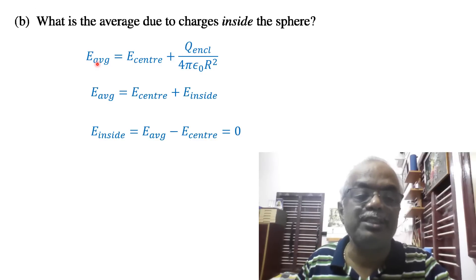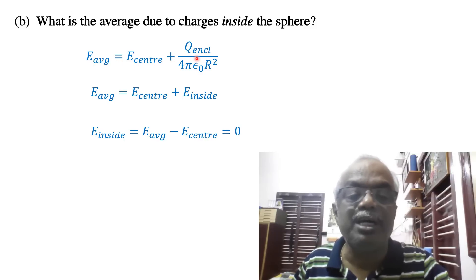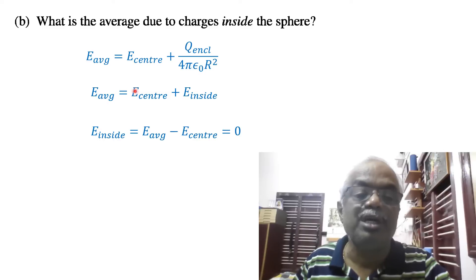The average electric field equals the electric field at the center plus the electric field from inside the sphere: E_avg = E_center + Q_encl/(4πε₀R²), where R is the radius of the sphere. We can write this in terms of E_inside.